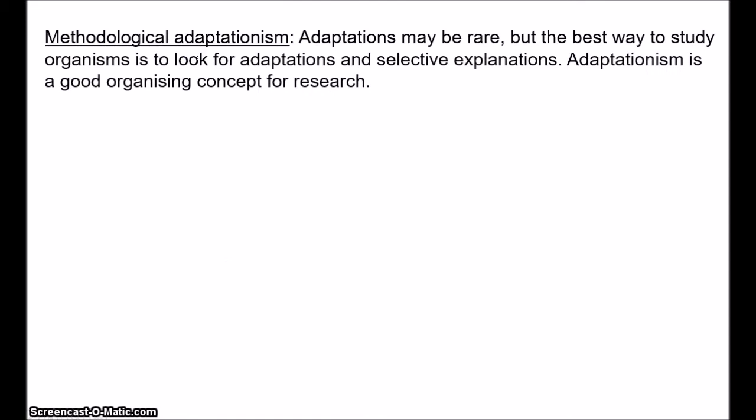Third, there is methodological adaptationism. This is the view that the best way to study organisms is to look for adaptations and selective explanations. Adaptations may in fact be quite rare on this view, and selection may be heavily constrained by other factors. Nevertheless, adaptationism is a good organising concept for research — a good way of doing biology. It is clear how adaptationism can generate useful hypotheses about traits. We can consider a problem faced by the organism and propose a possible adaptive solution, or we can reverse engineer the possible selective origin of a trait. Although Gould and Lewontin argued that adaptationism in general was unfalsifiable, it's pretty clear that specific hypotheses about how certain traits are a product of selection are entirely falsifiable.